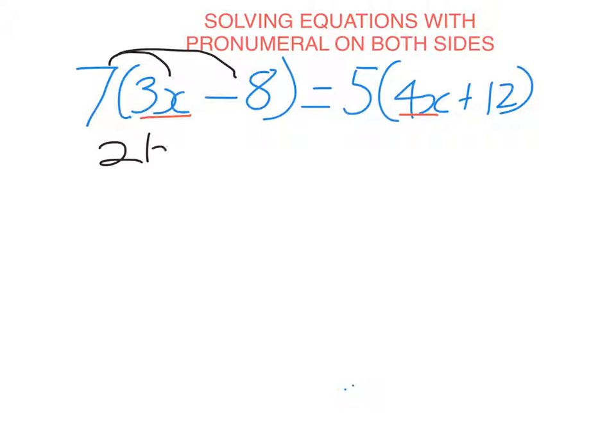So 7 times 3x is 21x, 7 times 8 is 56, positive times a negative, negative. Do the same on the other side, 5 times 4x is 20x, 5 times 12 is 60, positive times by a positive is obviously positive.